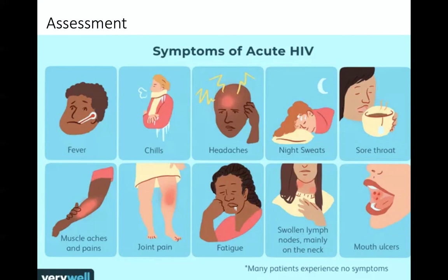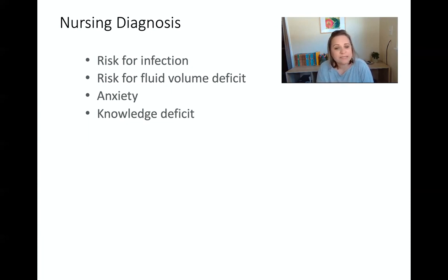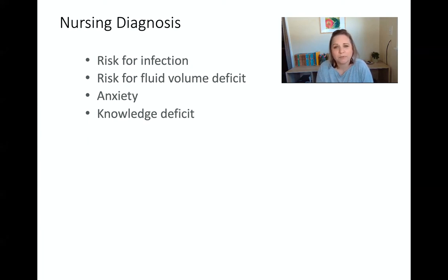These can look like pretty typical signs and symptoms of infection, so you really have to get into the lifestyle of your patient to assess their risk factors for HIV and AIDS. Nursing diagnoses related to HIV and AIDS include risk for infection and terrible complications if they get an infection, risk for fluid volume deficit, anxiety related to the condition and diagnosis, and knowledge deficit. It takes a compliant patient taking their antiretrovirals and practicing safe lifestyle choices to avoid transmission to others.